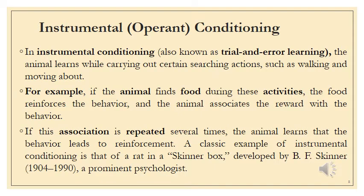After classical conditioning, we come to instrumental or operant conditioning, which is a further refined form of learned behavior in animals. Also known as trial and error learning, an animal learns while carrying out different behavioral patterns such as searching actions — walking, moving around. For example, if an animal finds food during these activities, the food reinforces the behavior of that movement, and the animal associates the reward with the behavior.